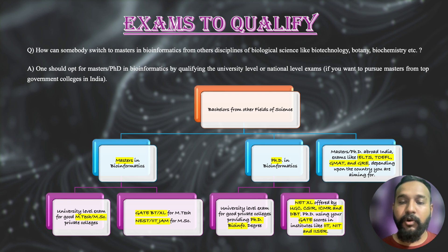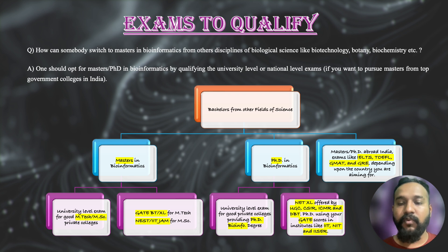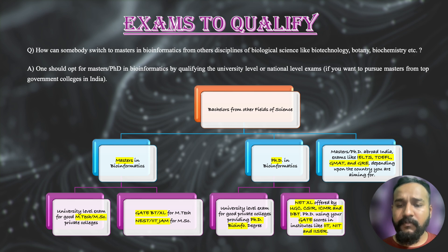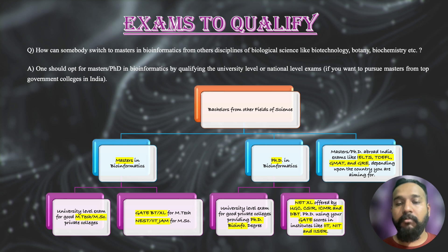For pursuing a PhD in bioinformatics, the exams are more or less the same for every field. For a private university, you have to qualify their own entrance exams. For a government university or government lab, you need to qualify the National Eligibility Test — NET or NET-JRF — and you can pursue your PhD from UGC, CSIR, ICMR, DBT, or IISc. You can also pursue a PhD with a strong GATE score from IITs, NITs, or IISERs.